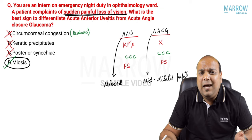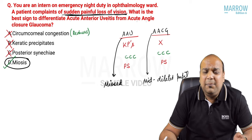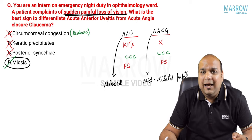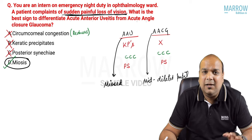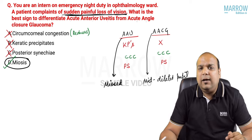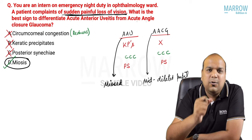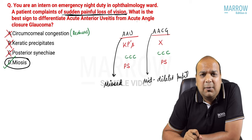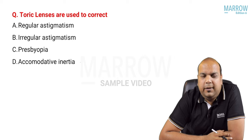If it is angle closure glaucoma, your main role is to reduce intraocular pressure as quickly as possible by administering either tablet acetazolamide or intravenous mannitol over 30 minutes. If it is acute anterior uveitis, your main aim is to start heavy-dose steroids as soon as possible to control the inflammation occurring in the patient's eye.